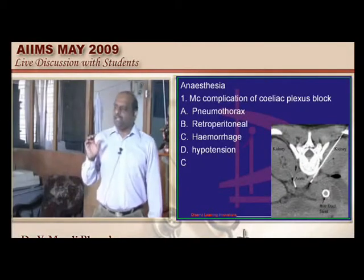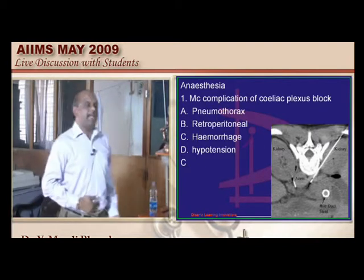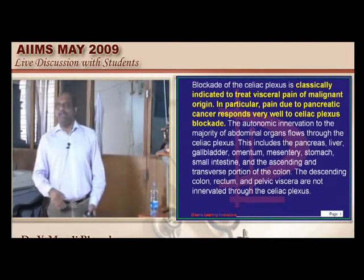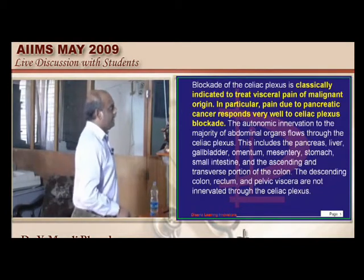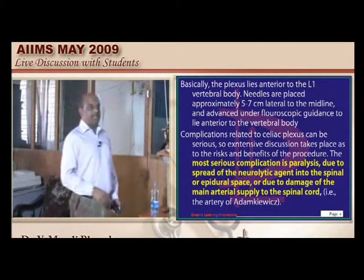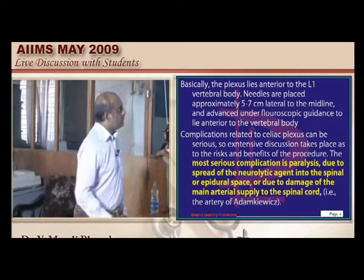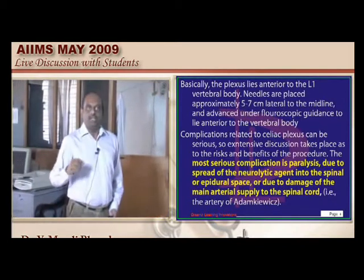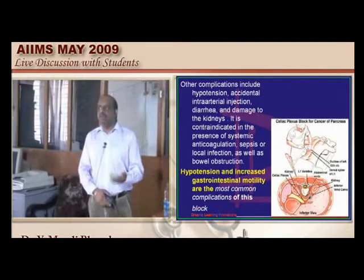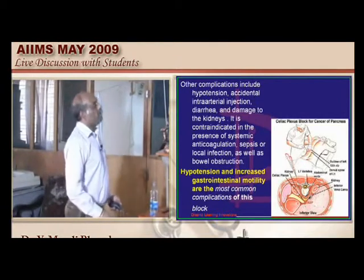The most common complication of the celiac plexus block. We block the celiac plexus in order to provide relief for visceral pain of malignant disease, especially pancreatic cancer-associated pain. The most serious complication is paralysis. The most frequently found complication is hypotension and increased gastrointestinal motility. The patient may go into a state of diarrhea. That is the most important, most common complication.